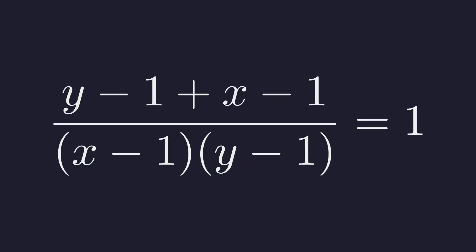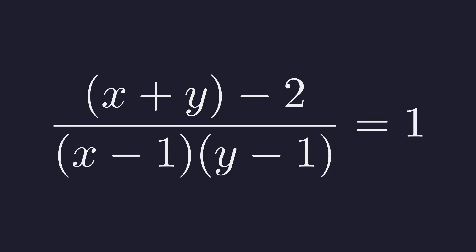Combining them gives us the quantity y minus 1 plus x minus 1 in the numerator, all over the quantity x minus 1 times y minus 1. Now, here's where things get interesting. Let's simplify the numerator by rearranging these terms. This lets us group the x and y terms together, which will make our next substitution easier. And now we can combine the constant terms. The numerator simplifies to the quantity x plus y minus 2.